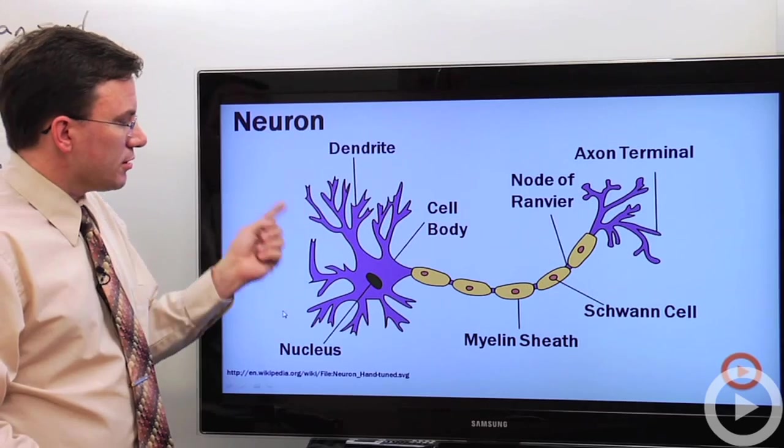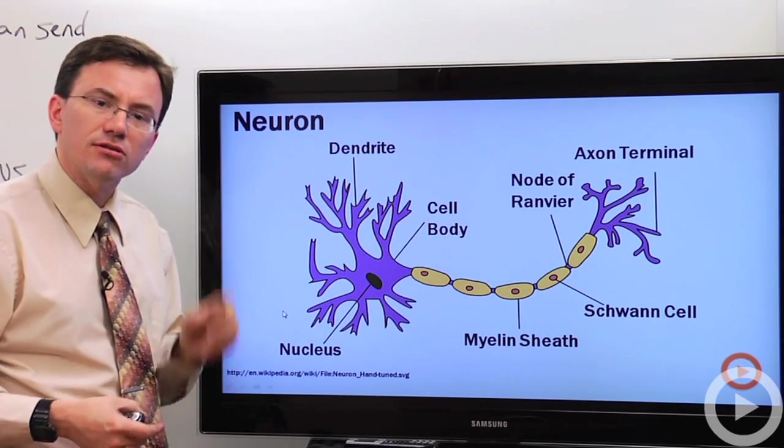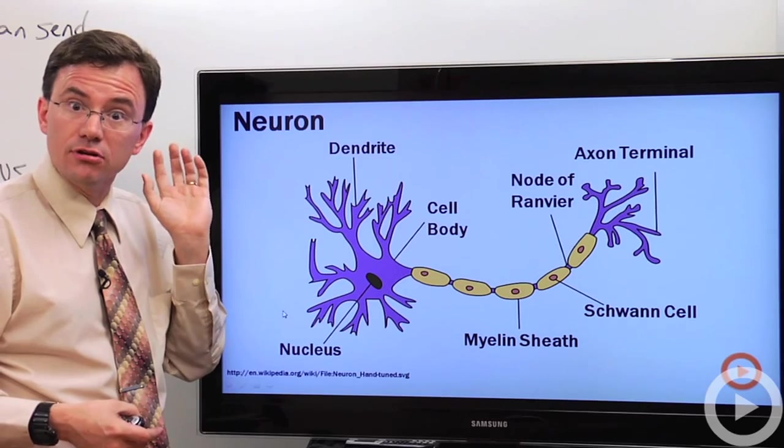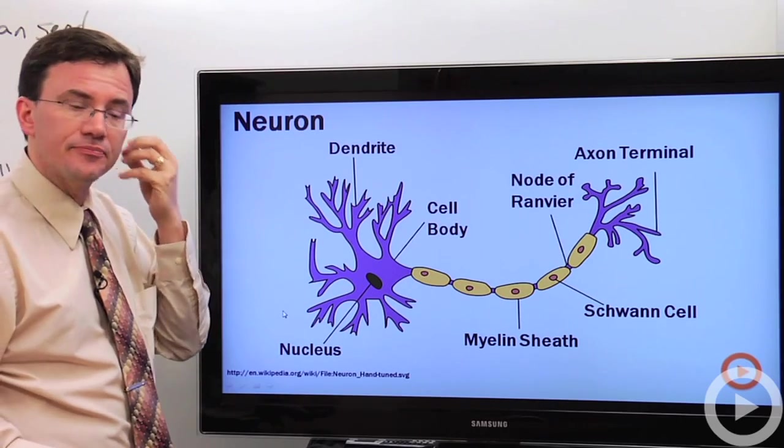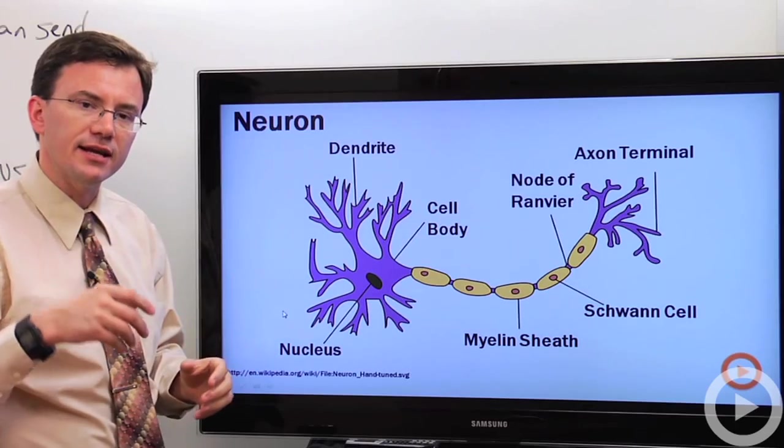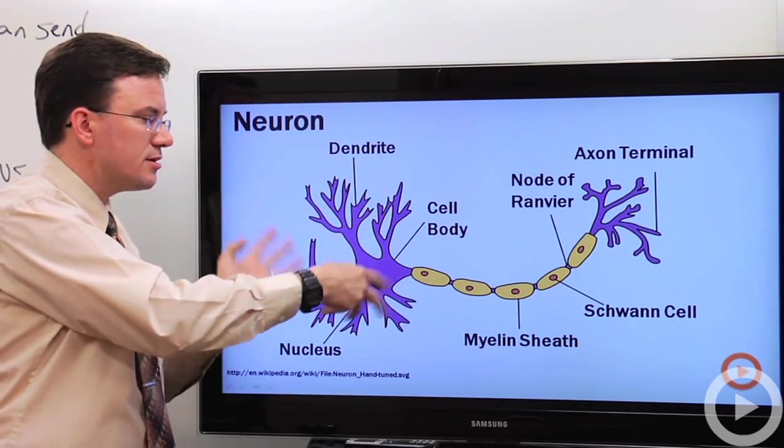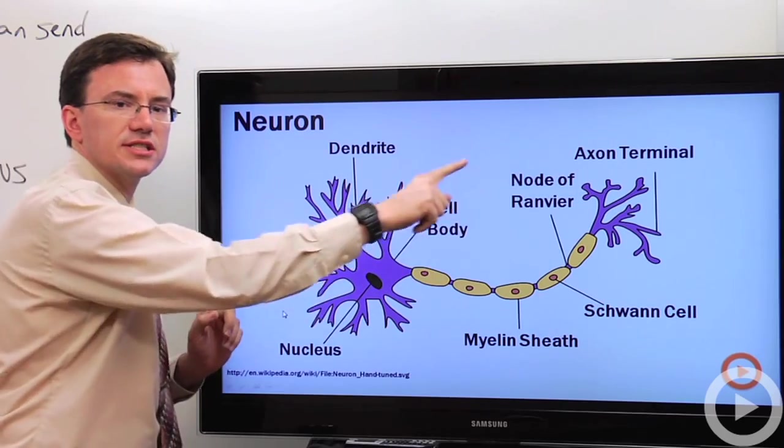And the dendrites are here. The dendrites are the parts of the neuron that collect in the signals. They're like the ears of the neuron. They take in data. The cell body is where you get a lot of the processing of that data. You collect in a bunch of signals from all the dendrites, and then the cell body says, yes, we shall send a signal.